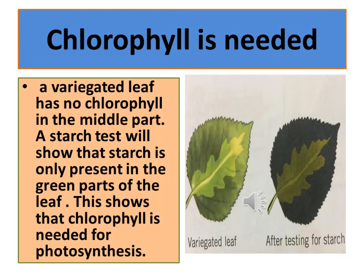A variegated leaf has no chlorophyll in the middle part. A starch test will show that starch is only present in the green parts of the leaf. This shows that chlorophyll is needed for photosynthesis.